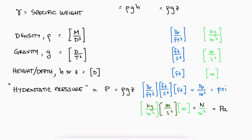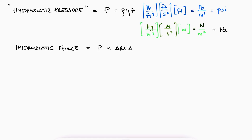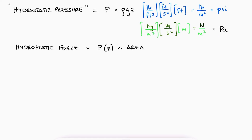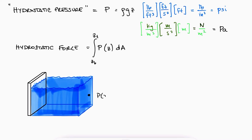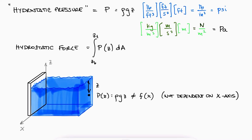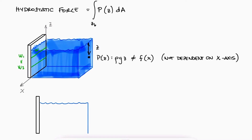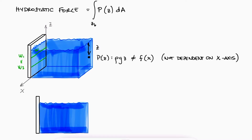The force from the liquid on a submerged surface would be the pressure times the area of contact, but since the pressure changes with depth, the force is actually the integral from the bottom to the top of the surface of the pressure times dA. Since the pressure is not changing in the horizontal axis, and the surfaces we analyze are usually rectangular, meaning the width is constant along the vertical axis, a reasonable 2D representation is to assume the pressure on the wall as a triangular distributed load.